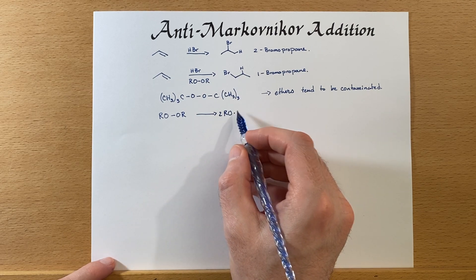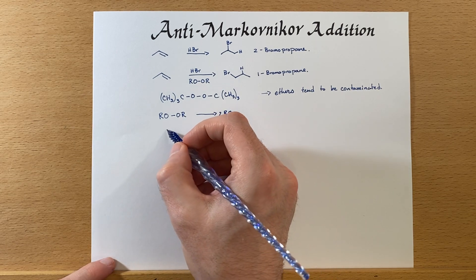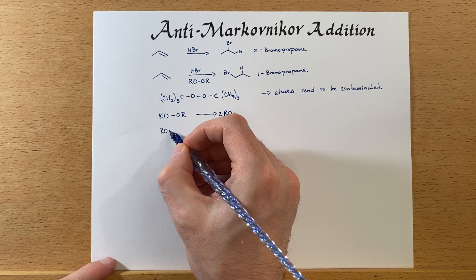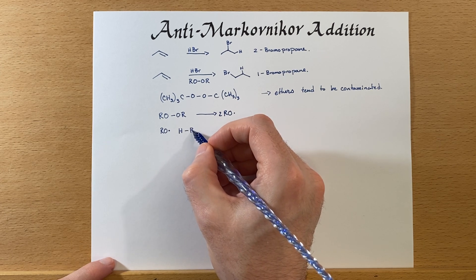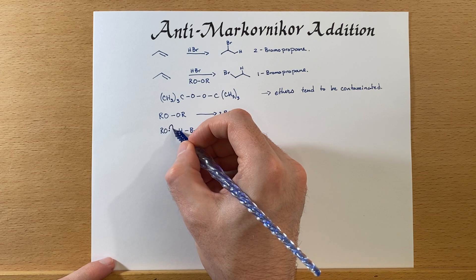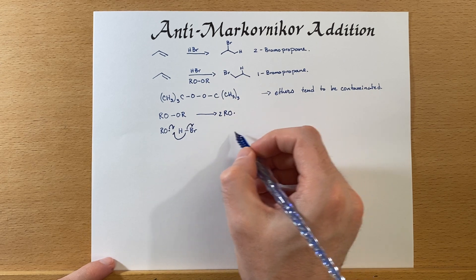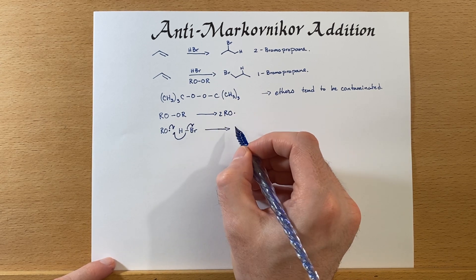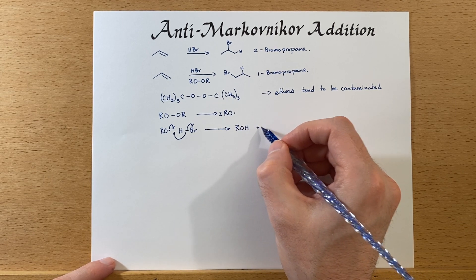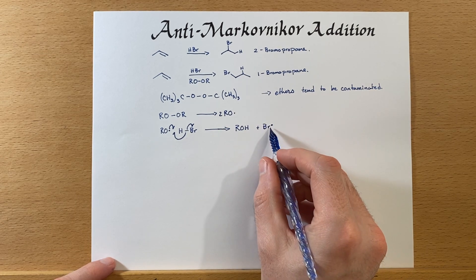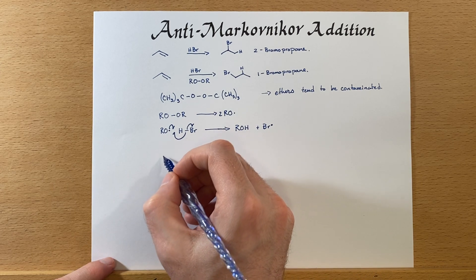Initially we will generate our radical from the peroxide — this is just homolysis. Then our peroxide radical can react with HBr through an SH2-type mechanism, which generates a bromine radical. The bromine radical can then do addition to our alkene.